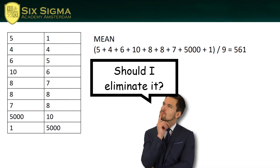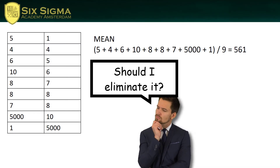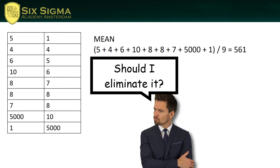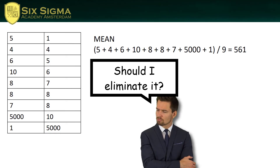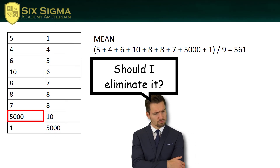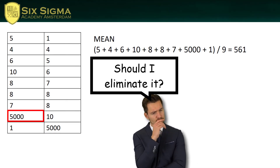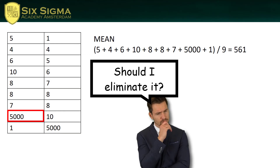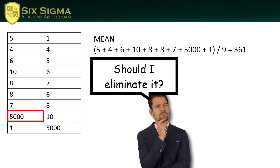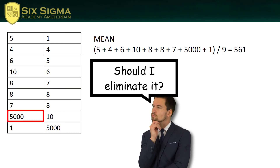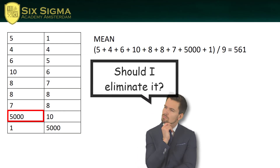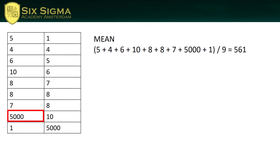...and if every group of nine people, or many groups of nine people, contain one person who is heavily addicted and cannot control themselves and spends incredible amounts of money, then this is just part of the data and it should not be eliminated.